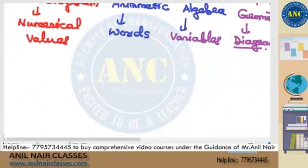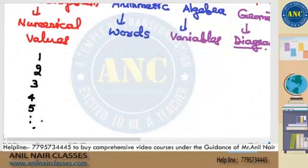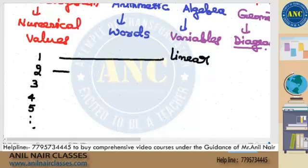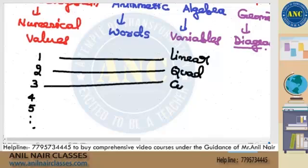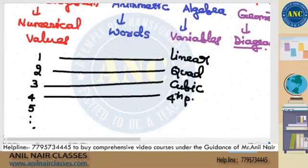Let me correlate number system, algebra, and geometry. In number system it is 1, 2, 3, 4, 5 and so on. In algebra, 1 is nothing but a linear equation, 2 is nothing but a quadratic equation, 3 is nothing but a cubic equation, 4 is nothing but a 4th power equation, and so on.